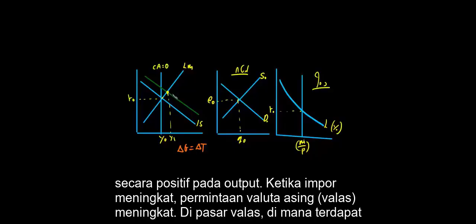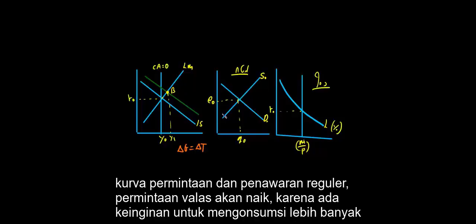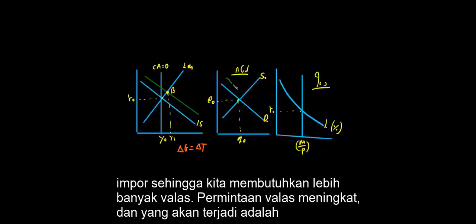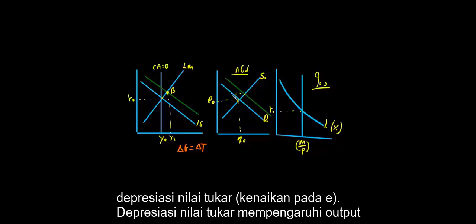When the product increases — at this point we call it B — output increases because it was positively dependent on output. When the output increases, the demand for foreign currency increases. In the currency market, which has normal demand and supply curves, the demand for foreign currency will increase because we now have a desire to consume more, so the demand for foreign currency increases, and what will happen in the immediate phase will be a depreciation in the exchange rate.